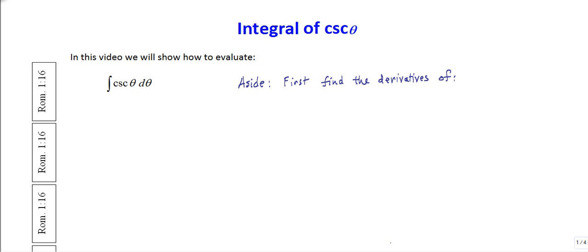First, let's find the derivative of cosecant, and then we'll look at cotangent after that. We know that cosecant is by definition one over the sine of theta, and we want its derivative, so we apply the quotient rule.